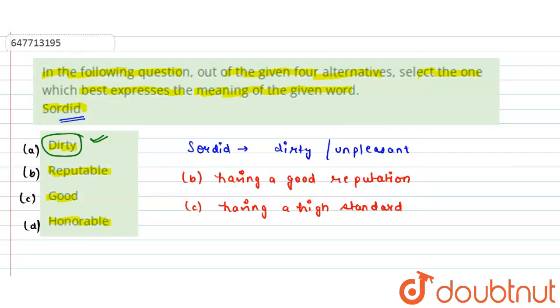And lastly we have option D that is honorable. Honorable means the one who brings honor. We can say bringing or deserving honor.